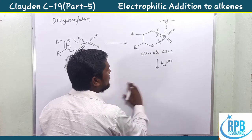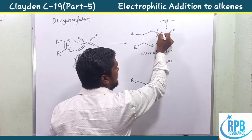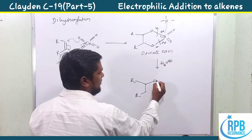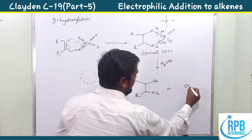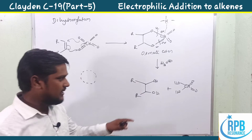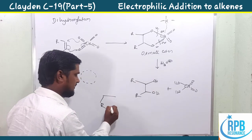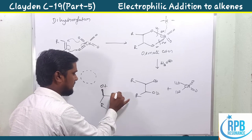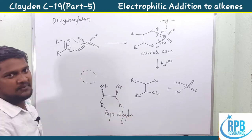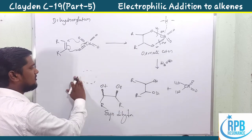After hydrolysis, O becomes OH — two hydroxyl groups are added on the same side, giving the syn dihydroxyl product. The stereochemistry of osmium tetroxide reaction is the syn dihydroxyl product.